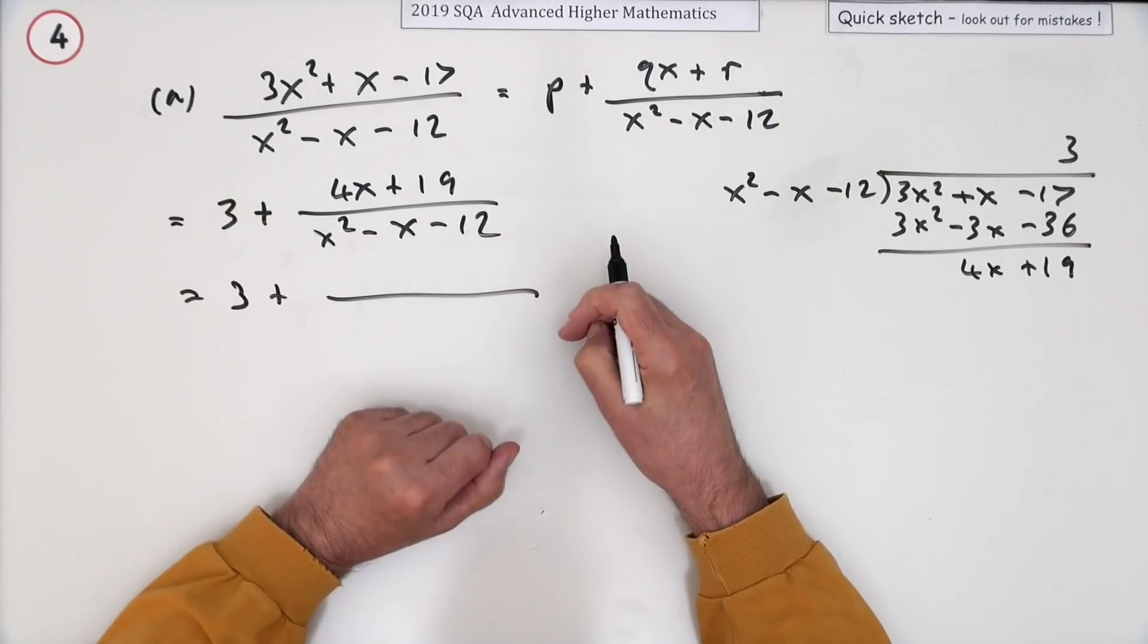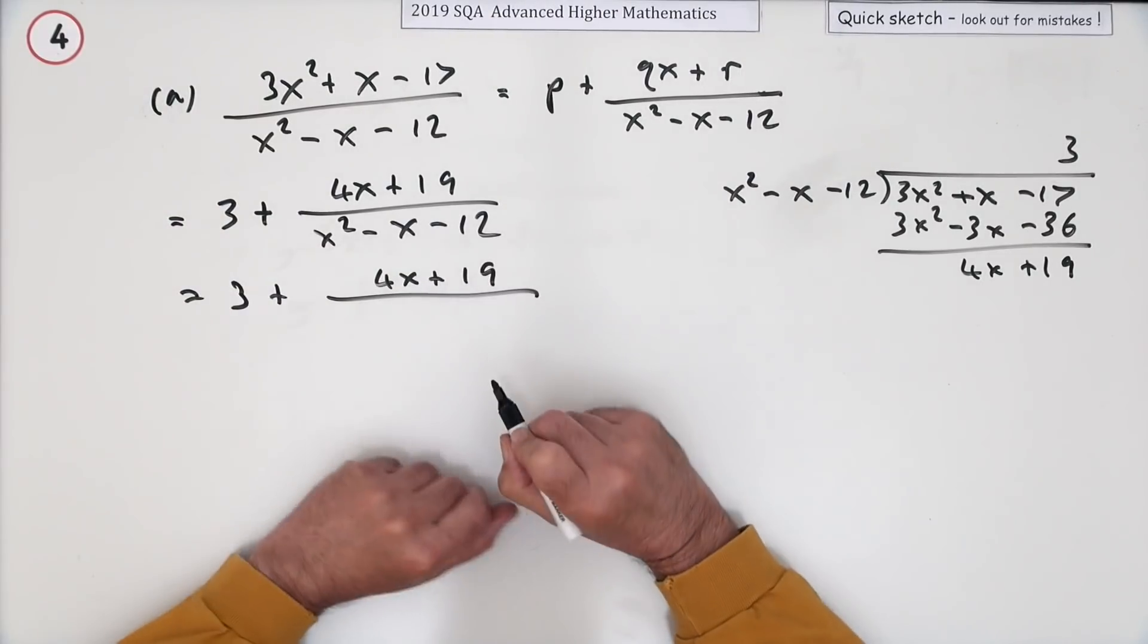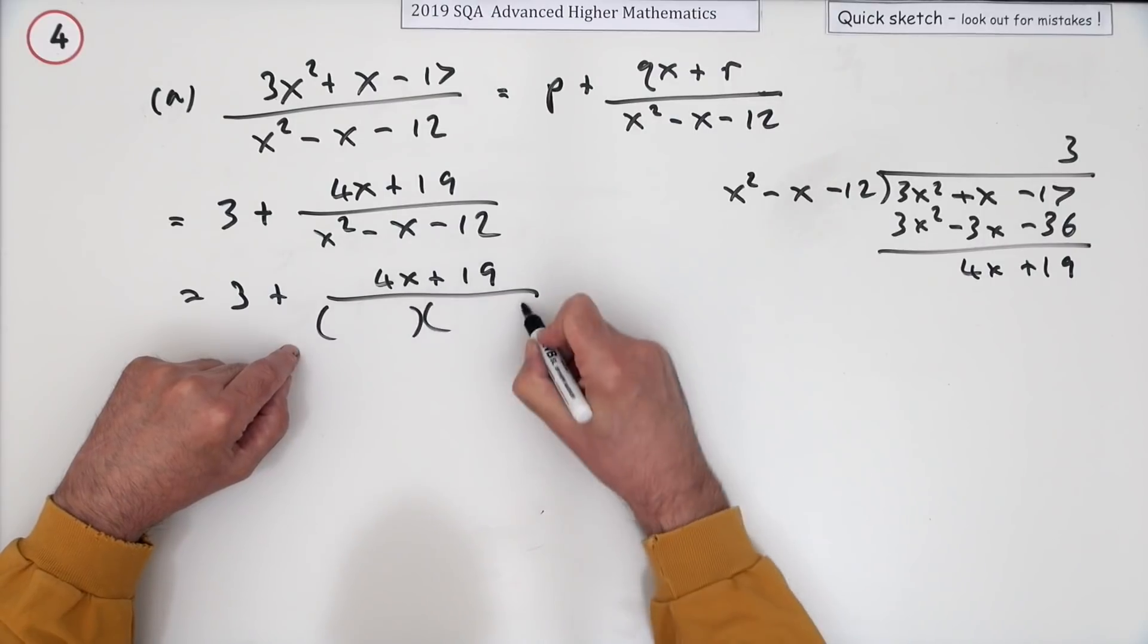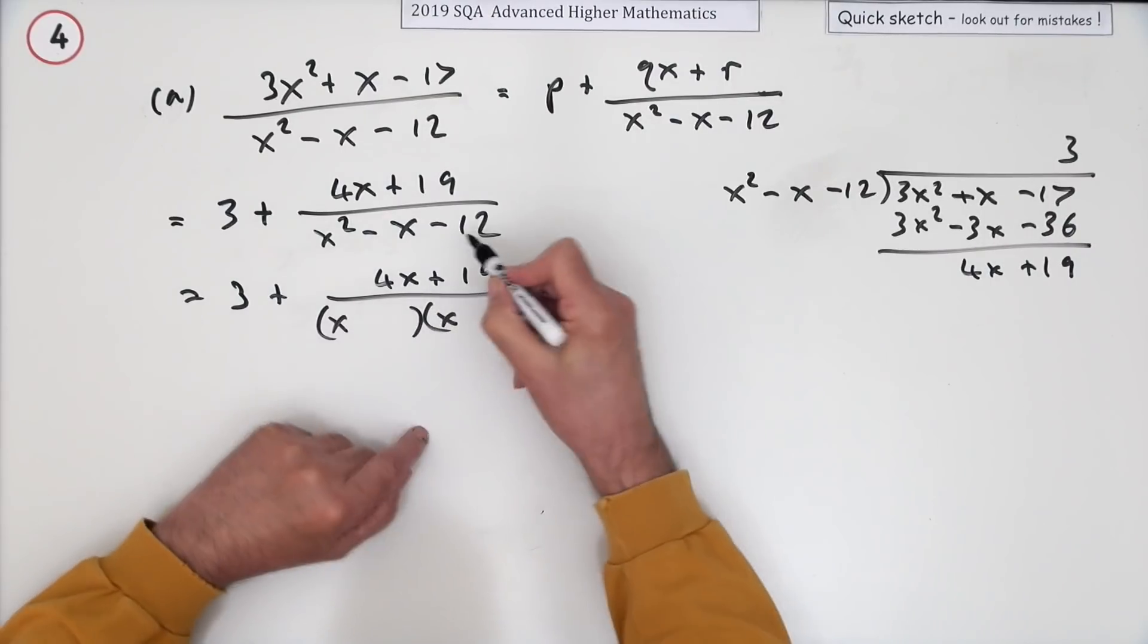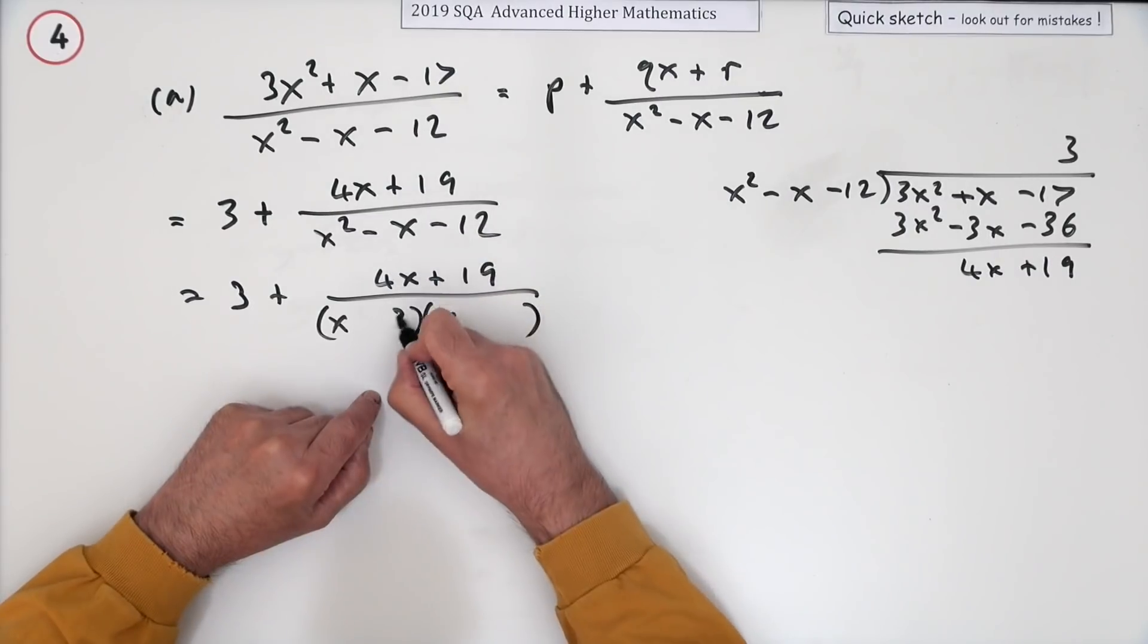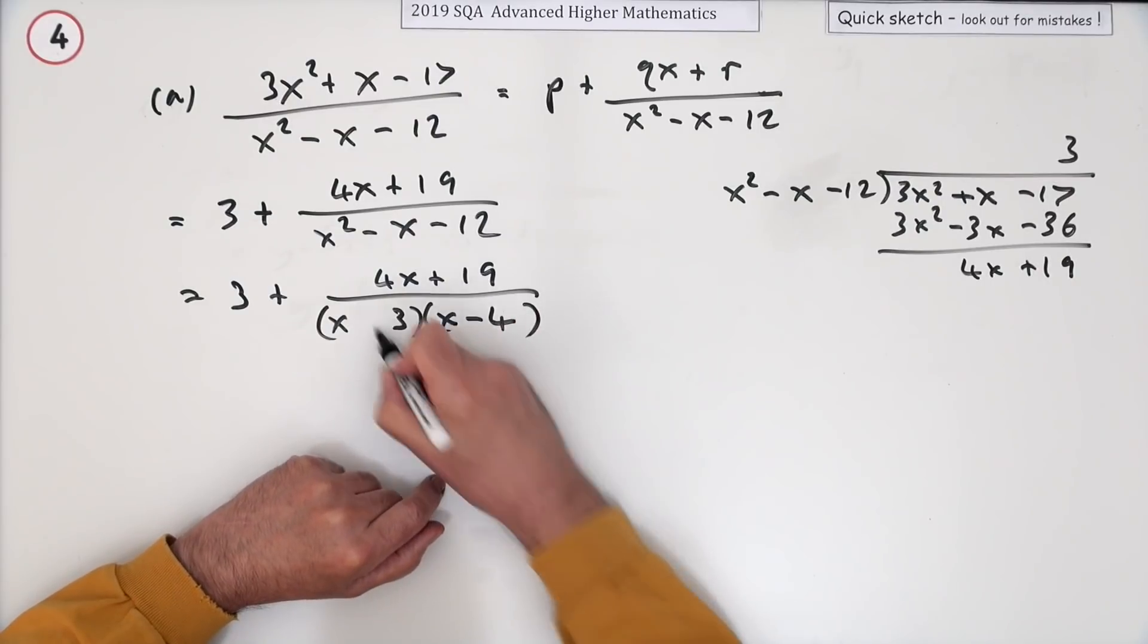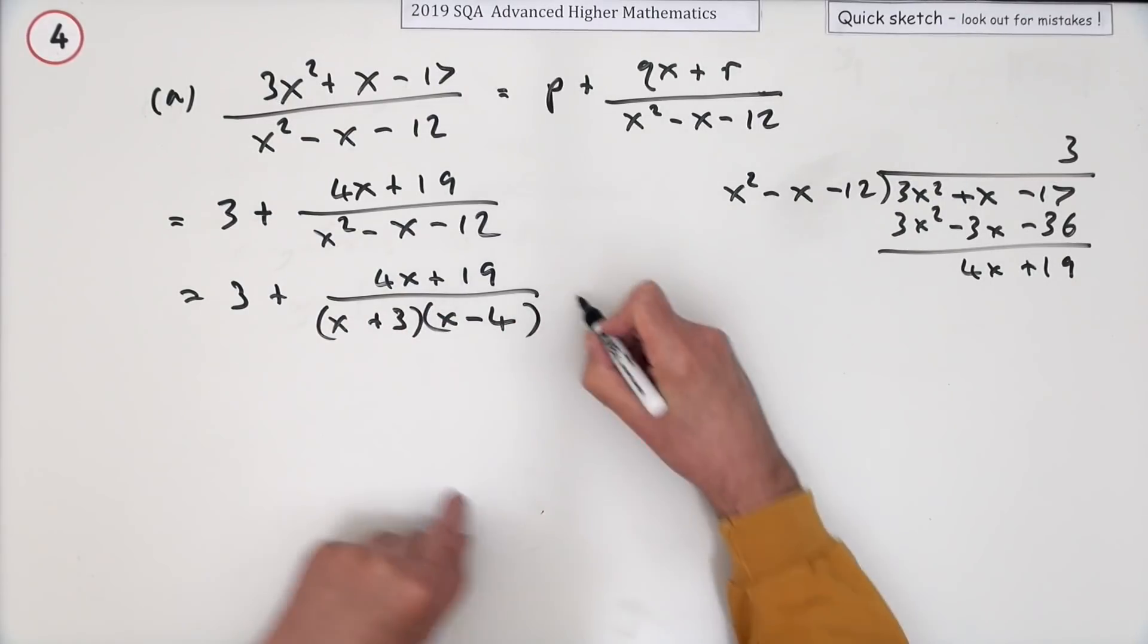Well, it must be x times x multiply to give 12 with a difference of just 1 - that's 3 and 4. It's a negative so the larger product's negative, so that's a plus. In which case I'm going to write that as 3 plus A over x + 3 plus B over x - 4.